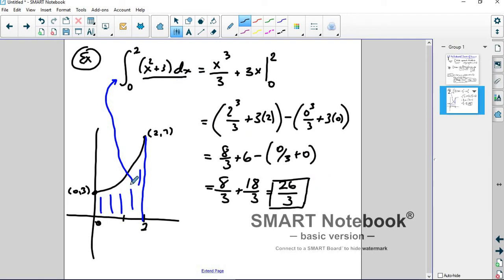And again, if f(x) is a positive function between a and b, then this integral right here represents the area. So this is 26 thirds, 8 and 2 thirds if you will, square units, whatever the units are. I don't have units right now, but if your function is given with units, then you can determine what those units might be. And we'll see a couple of examples like that in a little while.